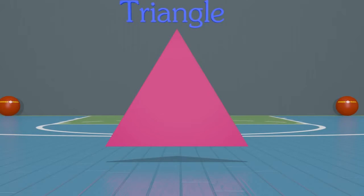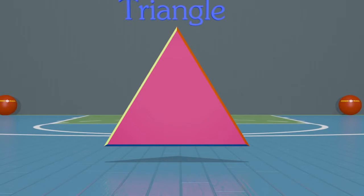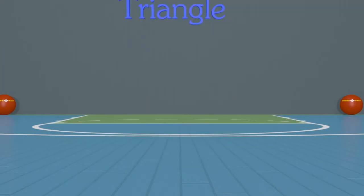Here we have a triangle, but what makes this shape a triangle? For a shape to be a triangle, it must have three sides and three angles. This shape has one, two, three sides. It has three sides, but does it have three angles? The angle is where two straight sides join together — sometimes angles are called corners. We can see that this triangle has one, two, three angles. So this shape is a triangle because it has three sides and three angles.